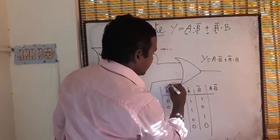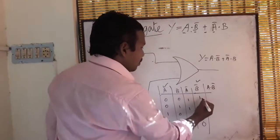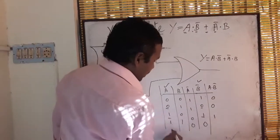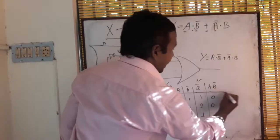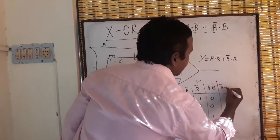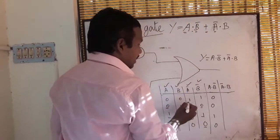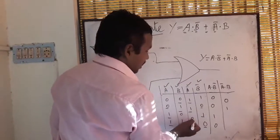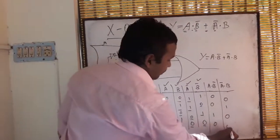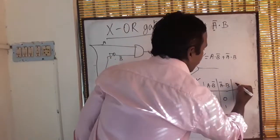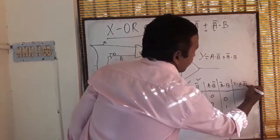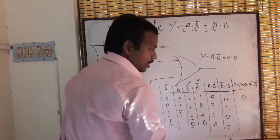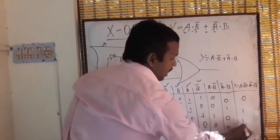The final equation will be A·B̄, that means A multiplied by B̄. So 0×1=0, 0×0=0, 1×1=1, 1×0=0. Again, Ā·B: 1×0=0, 1×1=1, 0×0=0, 0×1=0. The final answer Y = A·B̄ + Ā·B, that means addition of these two columns: 0+0=0, 0+1=1, 1+0=1, 0+0=0.